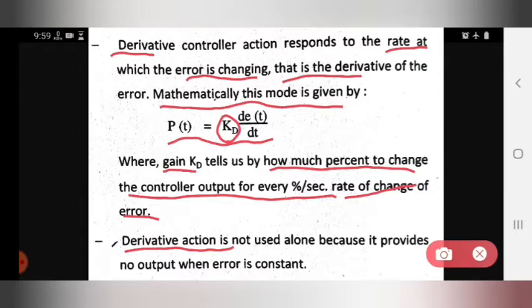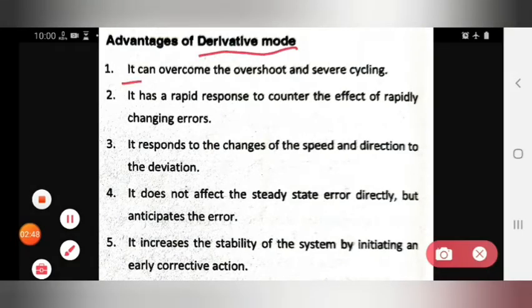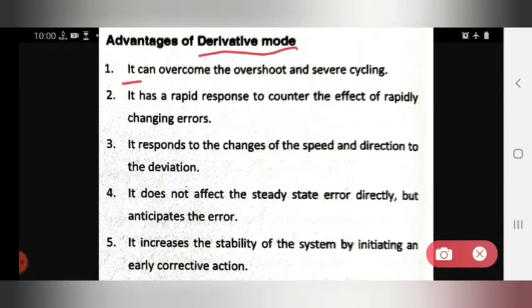Derivative action is not used alone because it provides no output when the error is constant. Now we see the advantages of derivative mode. First, it can overcome overshoot and severe cycling. Second, it has a rapid response to counter the effect of rapidly changing errors.